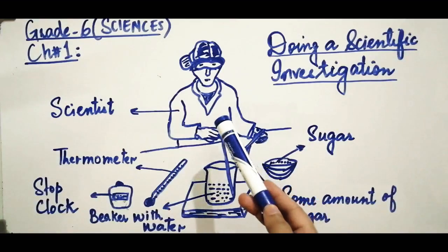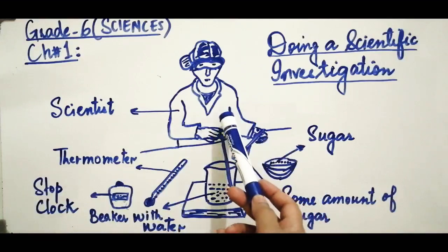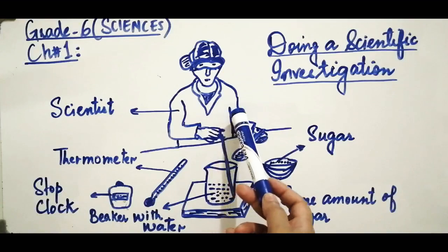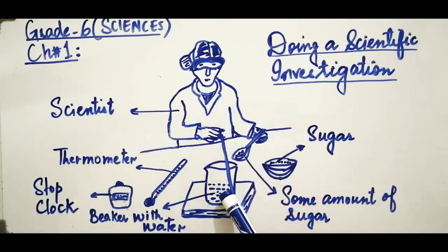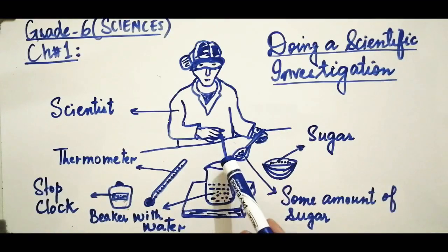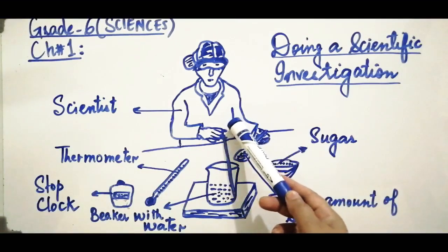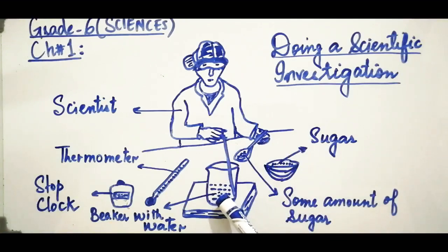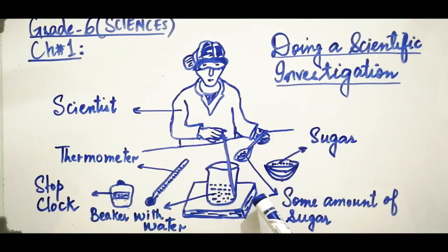Now see this picture. What is happening in this picture? A scientist is working in the laboratory. She is dissolving sugar into water. You can also see other apparatus such as a stop clock, stopwatch, thermometer, and other measuring instruments like a beaker, stirrer, and china dish. The scientist is dissolving sugar into a beaker of water to find out whether sugar dissolves in hot water or cold water.